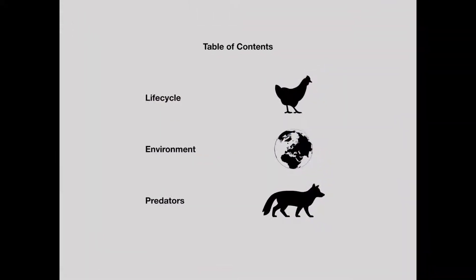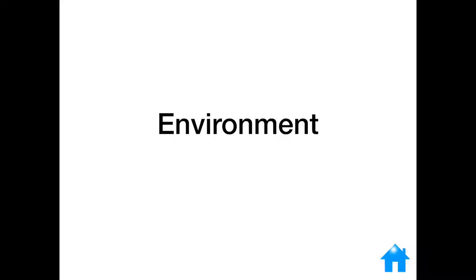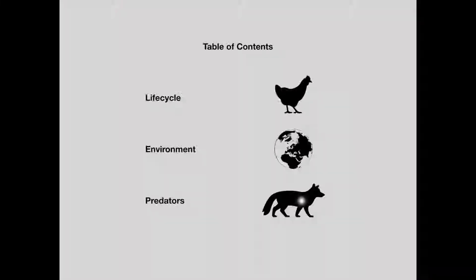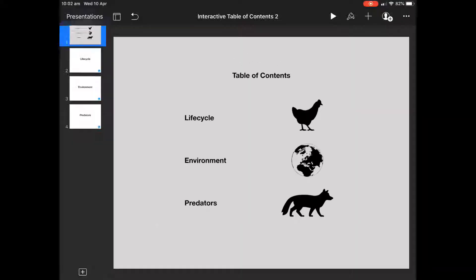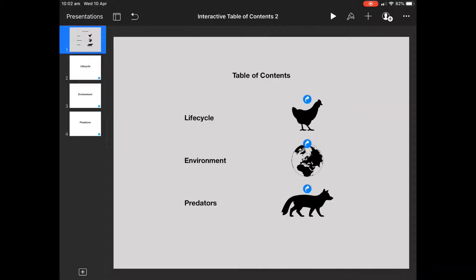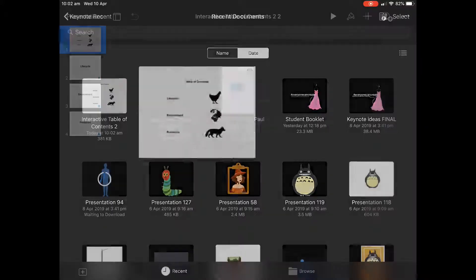What we're going to do in this tutorial is create an interactive table of contents. When you tap on the little icons, it goes to the different pages that the kids have actually created, and it's really easy to do. So let's get started.